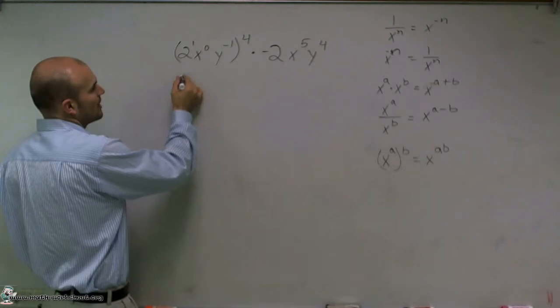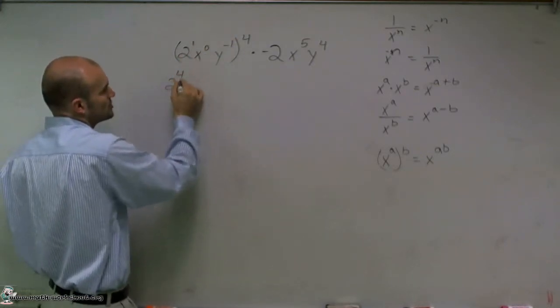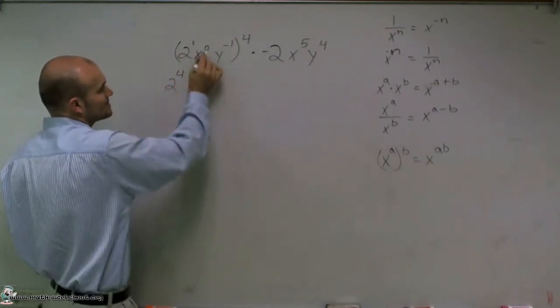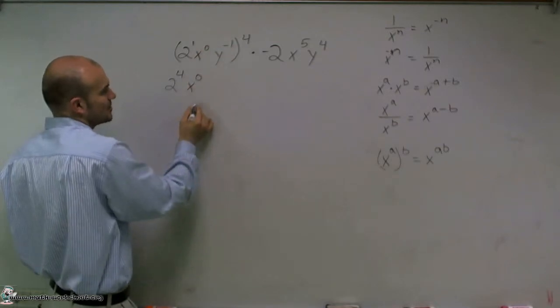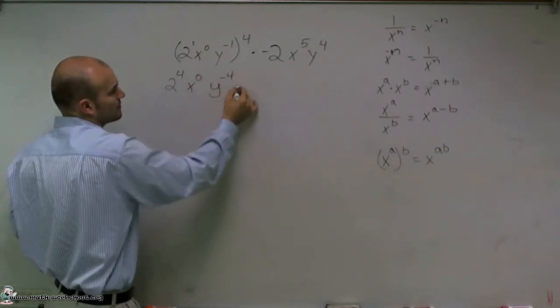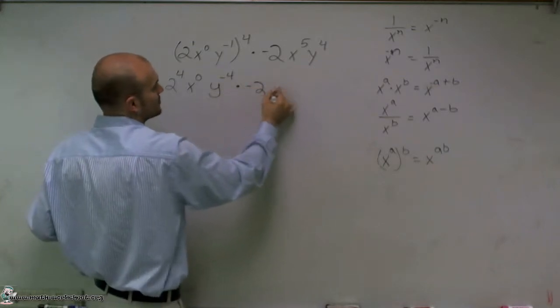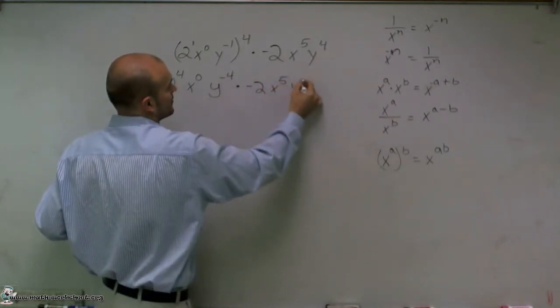So therefore, I really have 2 to the 1 times 4, which is 2 to the 4th, x to the 0 times 4, which is x to the 0, and y to the negative 4th, times a negative 2, x to the 5th, y to the 4th.